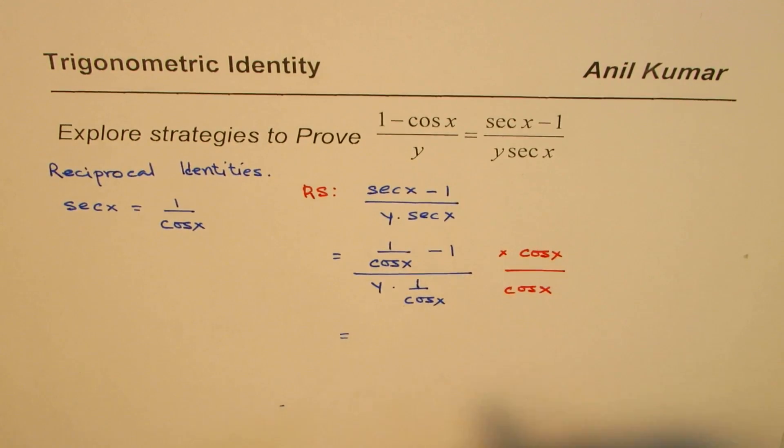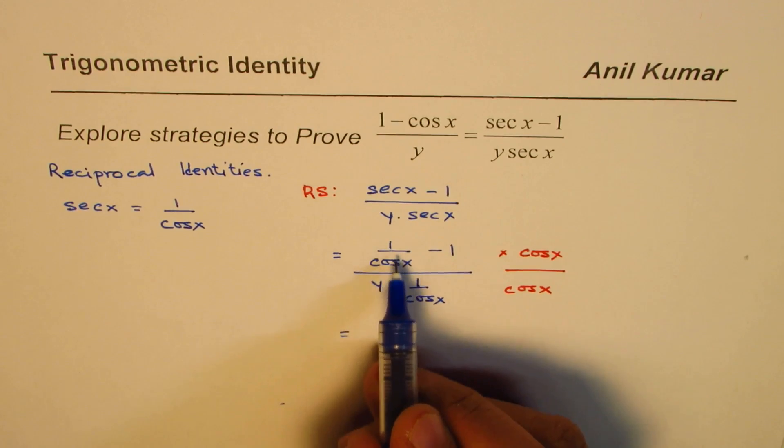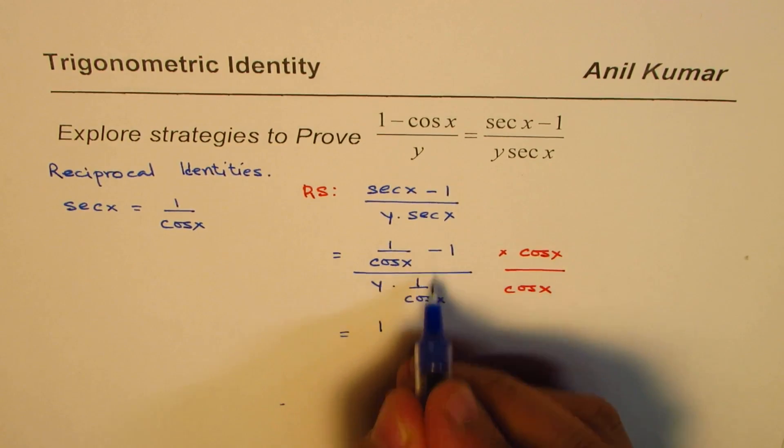If I do that, 1 times cos x divided by cos x is 1, so we get 1 here minus cos x.